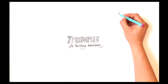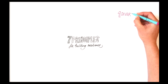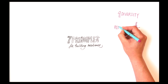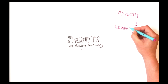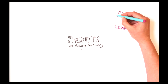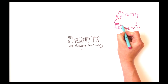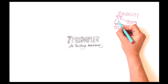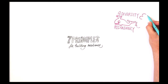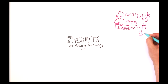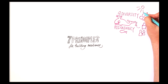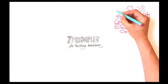Principle 1: Maintain diversity and redundancy. Systems with many different components, be they species, actors or sources of knowledge, are generally more resilient than systems with few components. Diversity allows some components to compensate for the loss or failure of others.